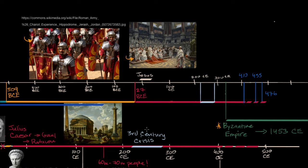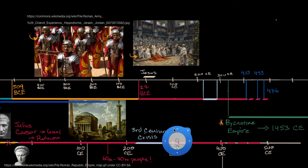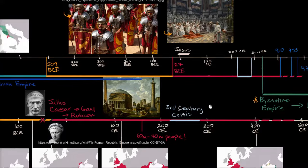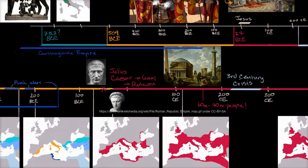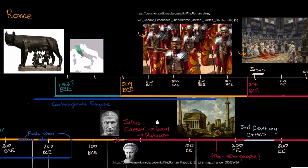So now looking at this timeline up here, and then down here I have some maps that are going to show how the Roman Empire grew and then eventually splits and declines. But as we go to this top timeline, we see the founding of Rome in the eighth century BCE.